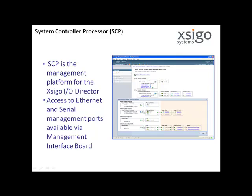The system control processor, or SCP, is the management platform for the SEGO I.O. Director. Through the command line interface, or the SEGO management system GUI, configuration changes are applied to the I.O. Director. Physical access to the Ethernet or serial management ports is made through the management interface board at the rear of the I.O. Director.